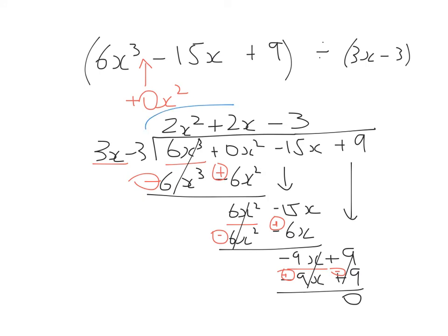So therefore, my answer is 2x² + 2x - 3. So just keep that in mind, guys, that if you have a value of x missing, so whether it be an x³, x², x, just put it in as 0 of that term and everything will work as usual.